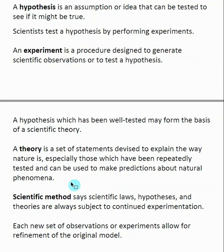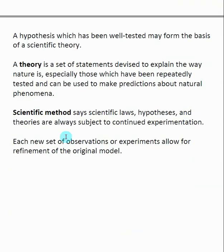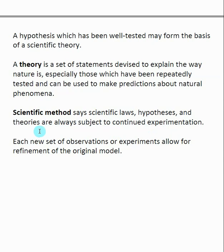That's really what the scientific method says. Scientific laws, hypotheses, and theories are always subject to continued experimentation. It's very difficult to truly prove something — all you can do is provide evidence that it is true. At any time, some new experiment may prove there is a flaw in a theory or hypothesis, and if that's the case, you have to go back to the beginning and correct it.